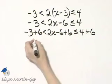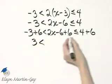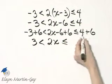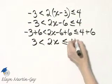Negative 3 plus 6, that is 3, is less than, notice in the middle I have 2x, and then is less than or equal to 4 plus 6, that's 10.